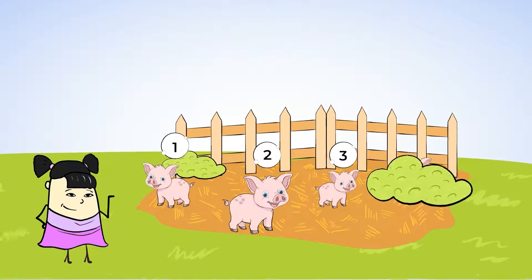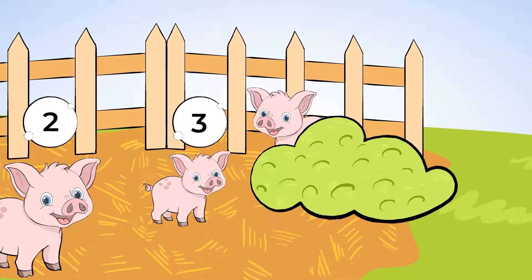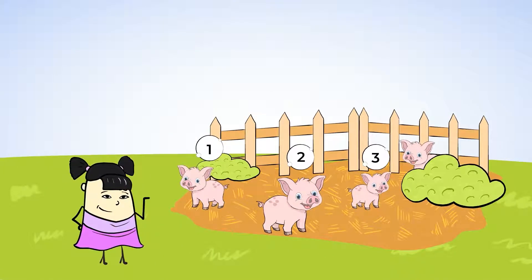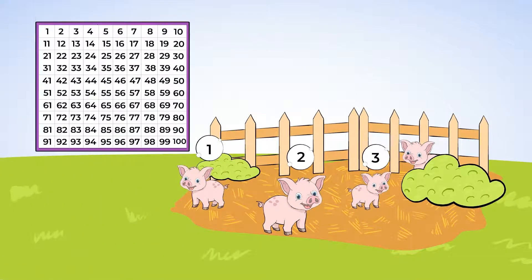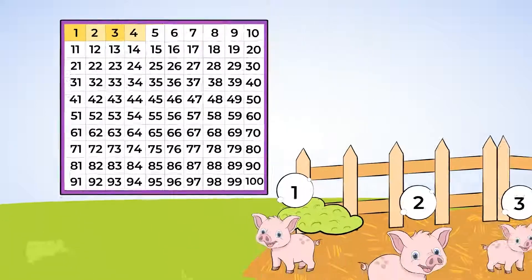But wait, what is that hiding behind the bush? There's one more sneaky piglet hiding back there. So we need to count one more. Take a look at the hundreds chart. What comes after three? After three comes the number four. There are four piglets.